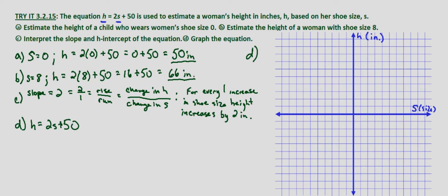Now let's look at the h intercept. If we look at our equation, b is 50 if we put this in y equals mx plus b form. So our h intercept is 0, 50. Before we interpret it, let's go ahead and graph our h intercept. We'll call each one of these 10 units.